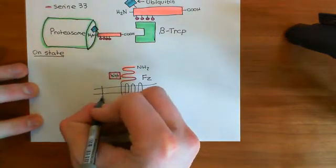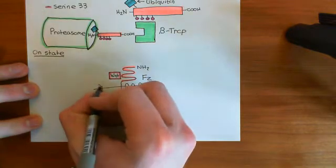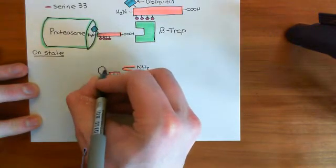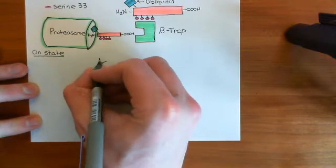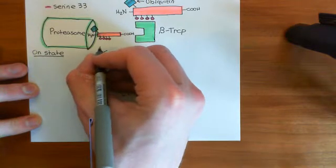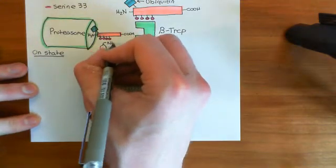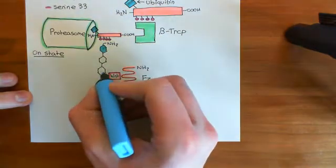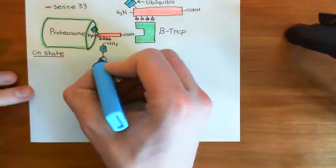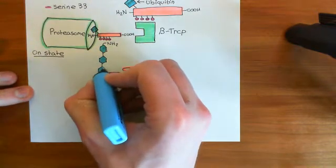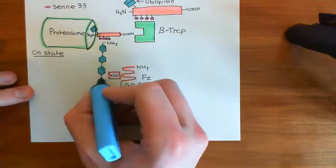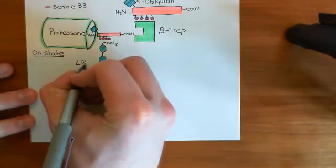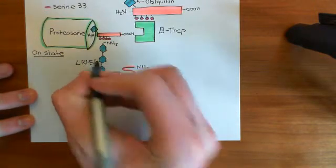Now we need our LRP5-6 protein here. Here's the carboxylic acid terminus, then the fourth beta-propeller domain, the third beta-propeller domain, the second beta-propeller domain, and the first beta-propeller domain. Then you have the amino terminus of the polypeptide right up there. We've got our Wnt molecule binding to the P3-P4 Wnt binding site, which consists of the bottom portion of P3 and the top portion of P4.